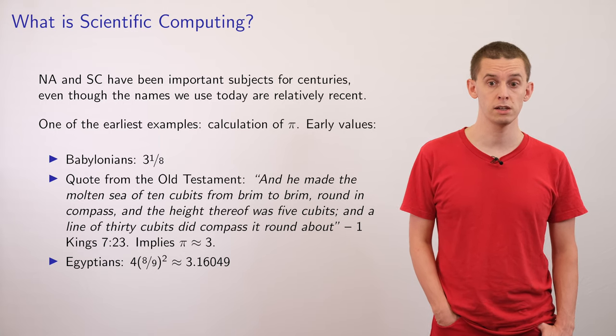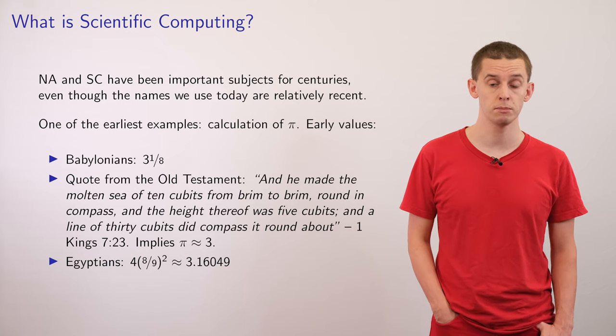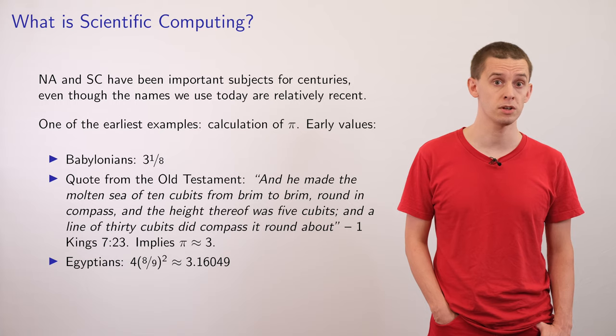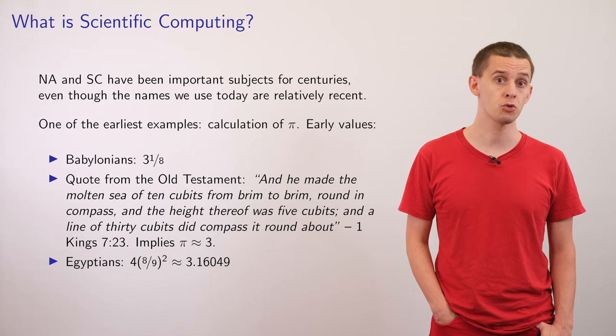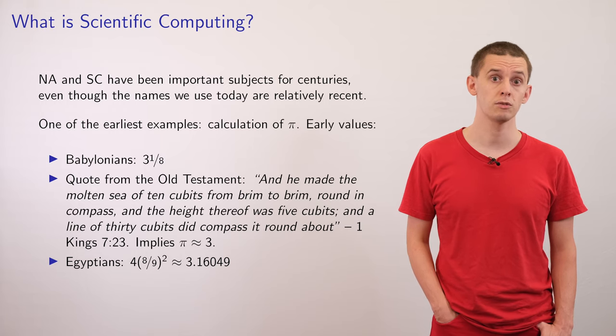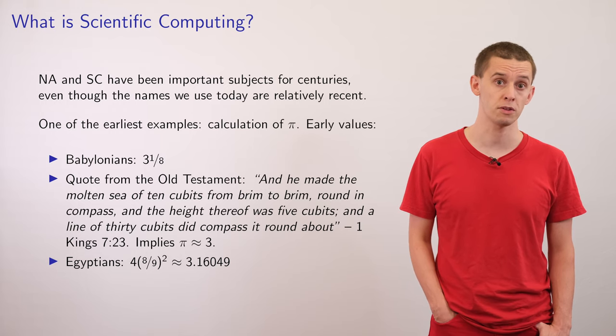and he made the molten sea of ten cubits from brim to brim, round in compass, and height thereof was five cubits, and a line of thirty cubits did compass it round about, and this was describing a bowl-shaped object with diameter ten and circumference thirty, and from here you can infer that pi is roughly three.